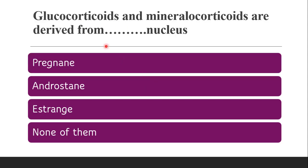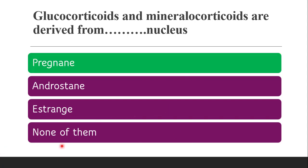Next question: glucocorticoids and mineralocorticoids are derived from which nucleus — whether pregnen nucleus (C21 steroid), androstane nucleus (C19 steroid), estrane nucleus (C18 steroid), or none of them. The correct answer is the pregnen nucleus — glucocorticoids and mineralocorticoids are both derived from the pregnen nucleus.